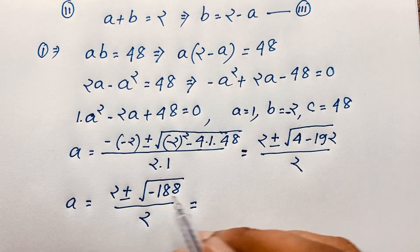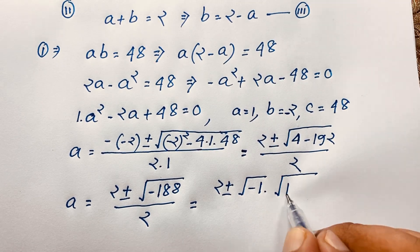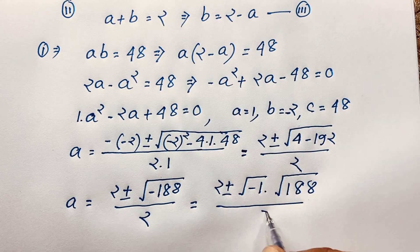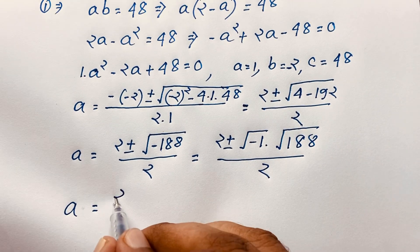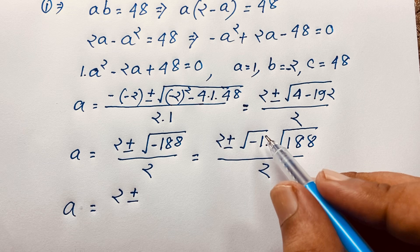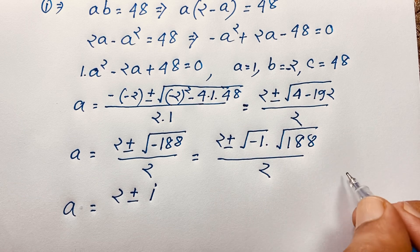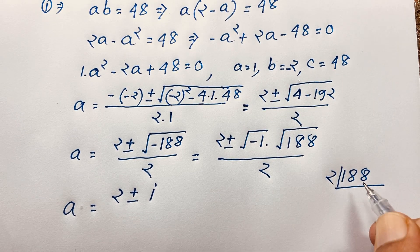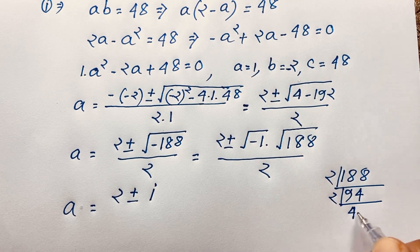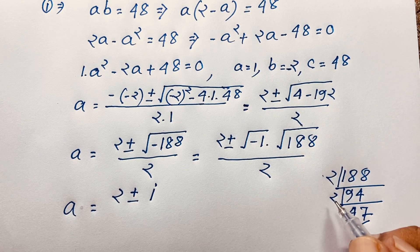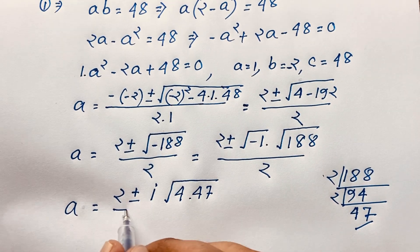We can write this expression as 2 plus or minus square root of negative 1 times square root of 188, over 2. We know that square root of negative 1 equals i, a complex number. Now, square root of 188: dividing 188 by 4, we get 47. Since 47 is a prime number, 188 equals 4 times 47. So we have square root of 4 times 47, over 2.